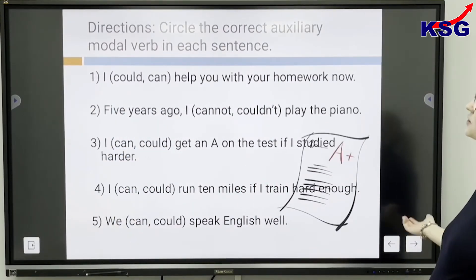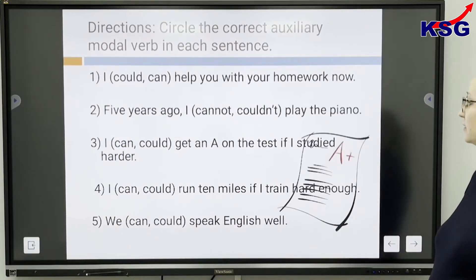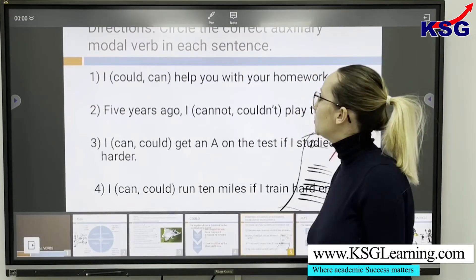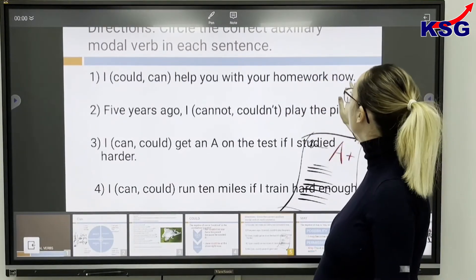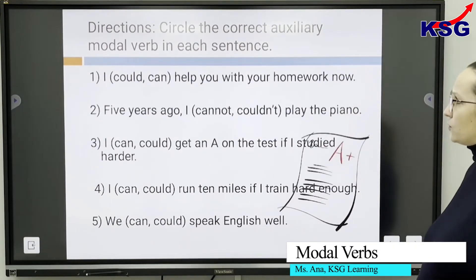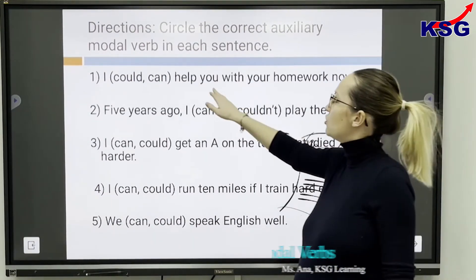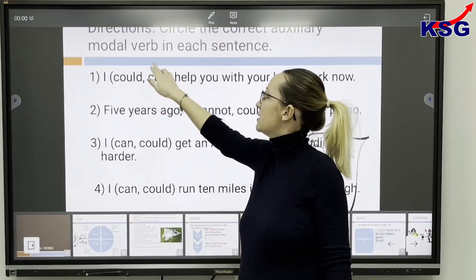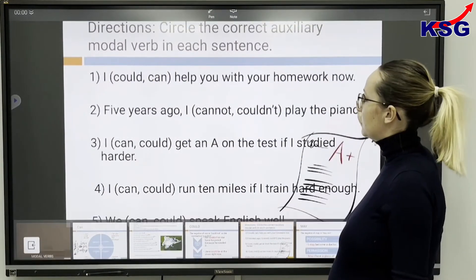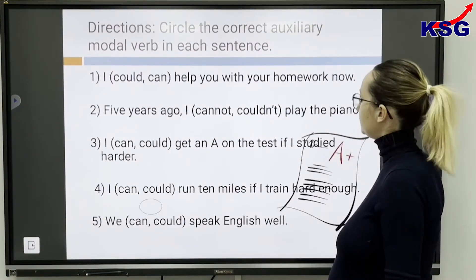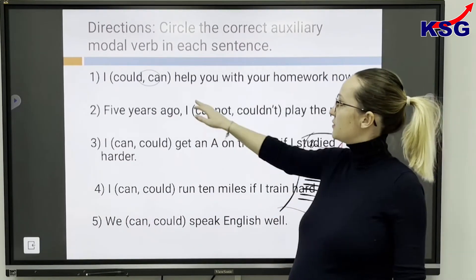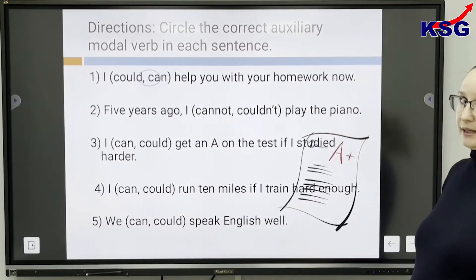Circle the correct auxiliary modal verb in each sentence. The first one: I could / CAN help you with your homework now. We need you to choose which of the two modal verbs is the correct one for this sentence. And the answer is CAN.